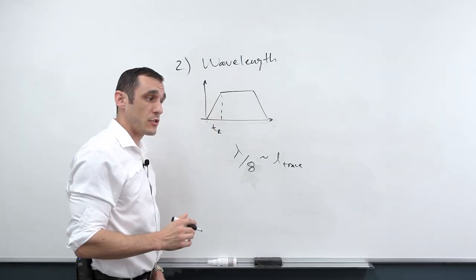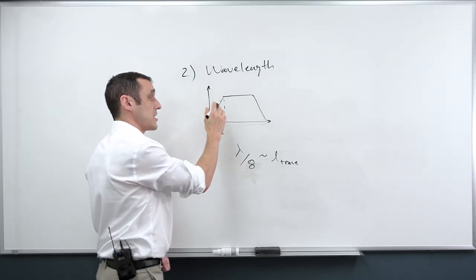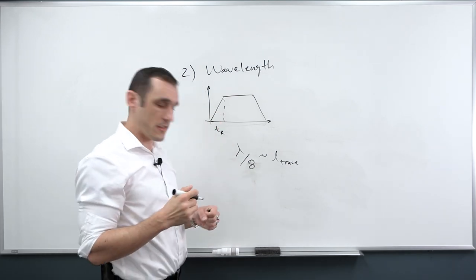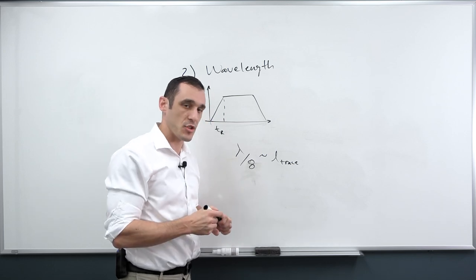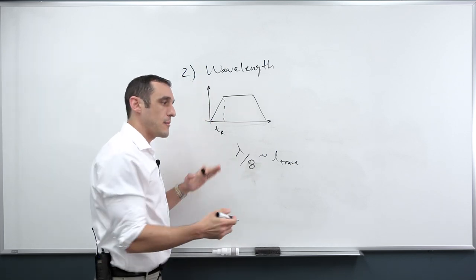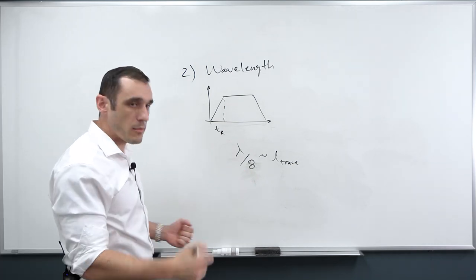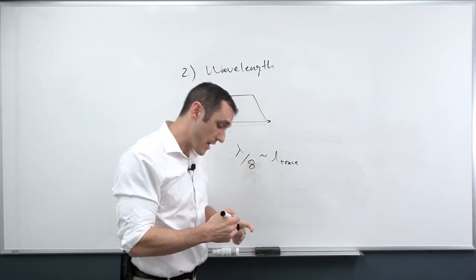This is because with a digital signal, you do not have a single wavelength. So with a digital signal, if you are going to use some sort of quality of the signal to determine whether or not a trace should be treated as a transmission line, look at the rise time. Don't try to get a wavelength because the wavelength that you're going to use is probably going to be wrong, because again, digital signals do not have a wavelength.